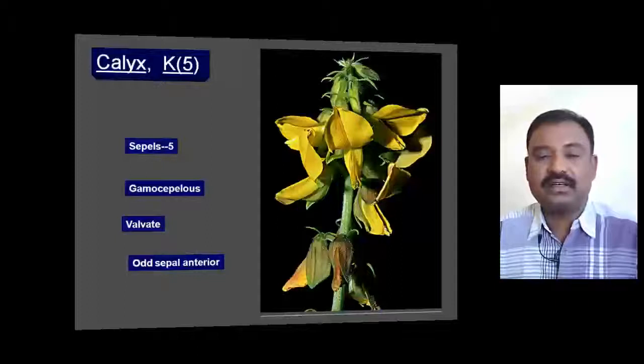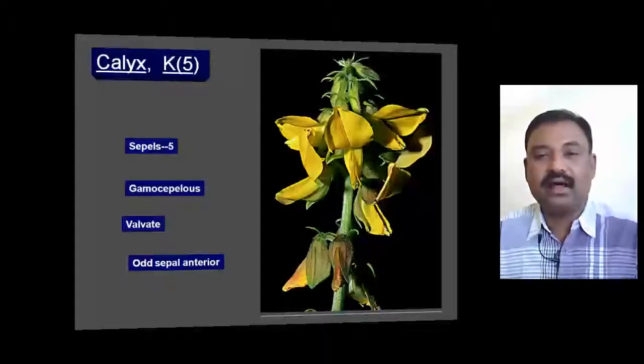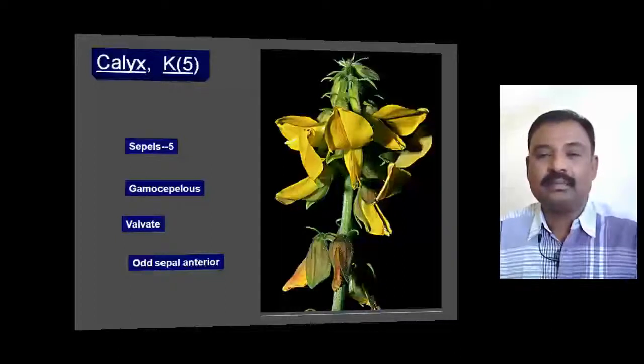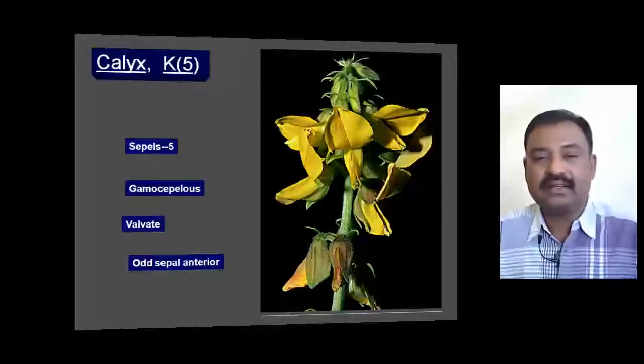Generally in Papilionoideae members, the odd petal is located on the anterior side.